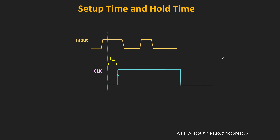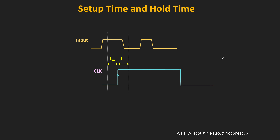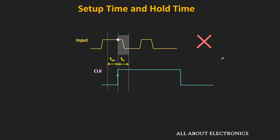In this case, the input is fulfilling the requirement of the setup time because before the arrival of the clock edge, the input remains constant during the setup time. Similarly, the hold time is the time duration for which the input should remain stable after the clock edge. If you see this input, although it is satisfying the setup time requirement, it is not fulfilling the hold time requirement because the input is changing during the required hold time of the flip-flop. So here there is a hold time violation, and because of that we cannot guarantee the proper output.